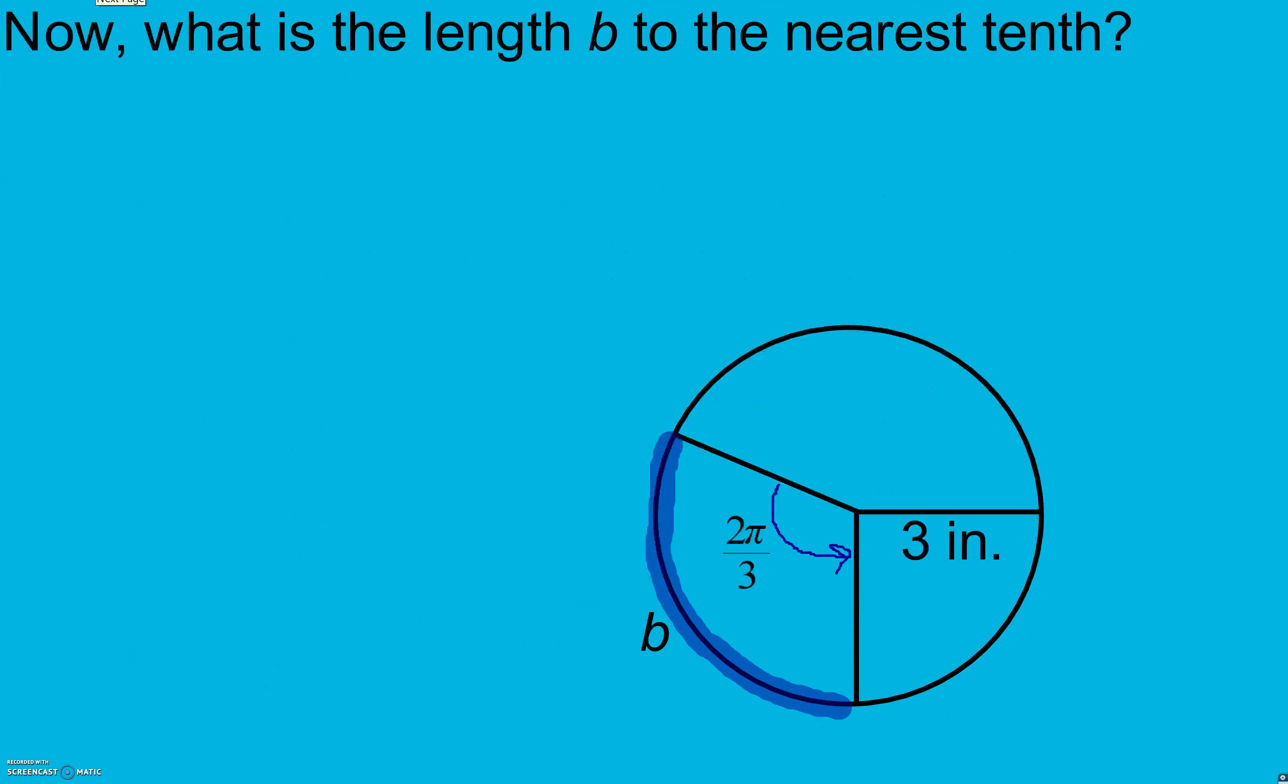What is the length b to the nearest tenth? If we look here, this has to be a central angle, which means all three of these cords are actually radii. They're all three inches.